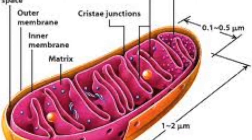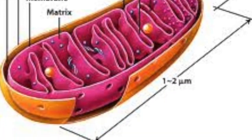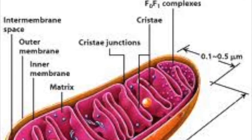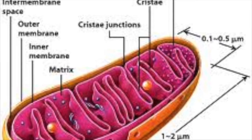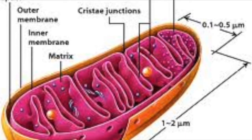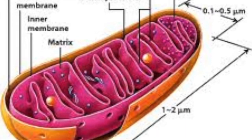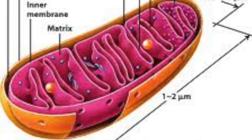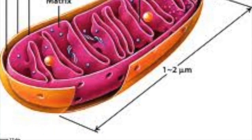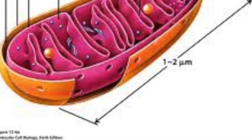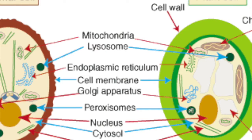Mitochondria. Mitochondria makes energy for a cell. The mitochondria has a high surface area to volume ratio, which means it can do more in a smaller space. Mitochondria is in all cells.